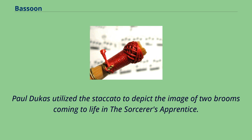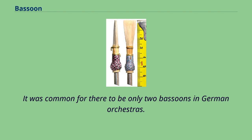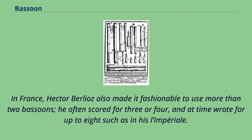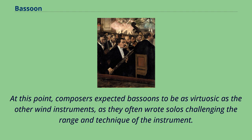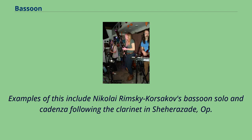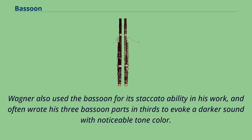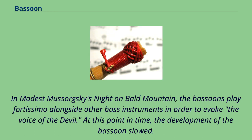It was common for there to be only two bassoons in German orchestras. Austrian and British military bands also only carried two bassoons, mainly used for accompaniment and offbeat playing. In France, Hector Berlioz also made it fashionable to use more than two bassoons; he often scored for three or four, and at times wrote for up to eight, such as in his L'Impériale. Composers expected bassoons to be as virtuosic as the other wind instruments, writing solos challenging the range and technique of the instrument. Examples include Rimsky-Korsakov's bassoon solo in Scheherazade, Op. 35, and in Wagner's Tannhäuser, which required the bassoonist to triple-tongue and play up to the top of its range at E5. In Mussorgsky's Night on Bald Mountain, the bassoons play fortissimo alongside other bass instruments to evoke the voice of the devil.